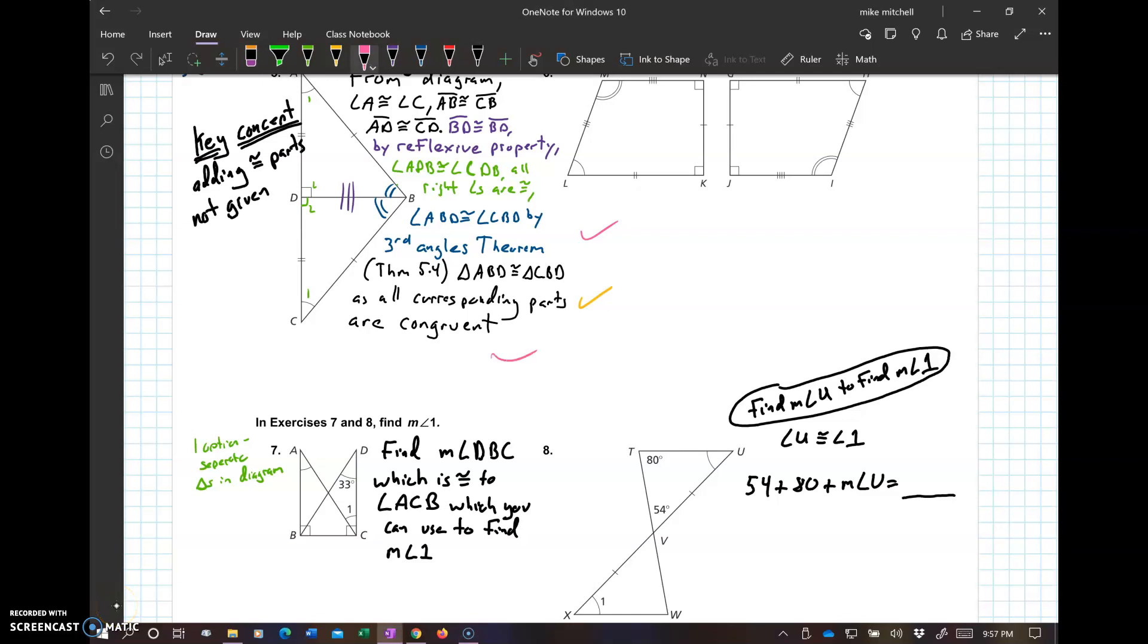And then theorem 5.4, that's our triangles are congruent because all the parts are congruent.